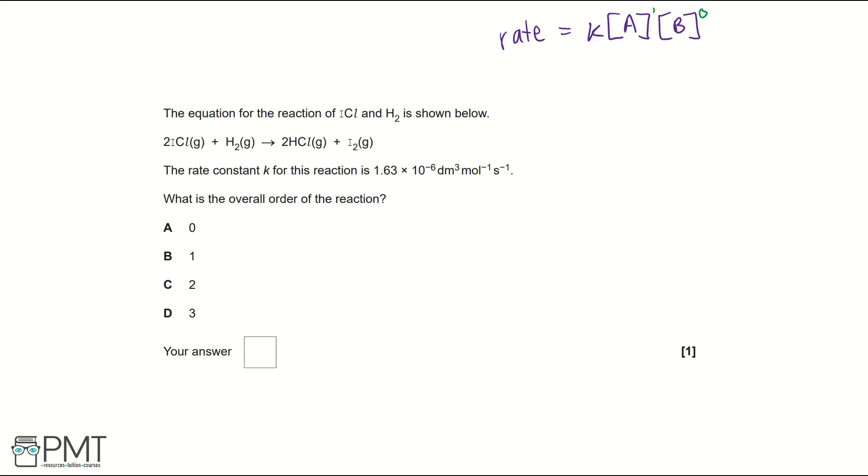And so then we can work out the units. So the way we do this is we do rate divided by A and then the concentration of B, but we wouldn't include the concentration of B if it was zeroth order. And that's going to equal K, and we can work out the units of K to work out what our overall order of reaction is.